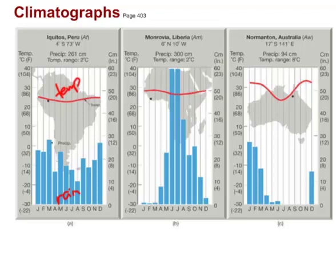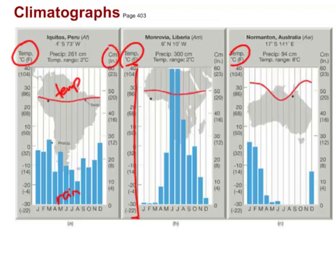What's important when comparing places is that the scales match. For example, make sure the temperature scales use the same scale across graphs. When we make our climatographs in class we're going to make sure we all agree on the same scale — and the same goes for precipitation, which is measured in centimeters.